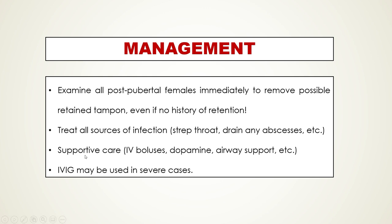We provide supportive care in the form of IV boluses, dopamine therapy for recalcitrant hypotension, and airway support in severe cases. Some practitioners use IVIG, as it acts as a competitive inhibitor for the immune system, fighting off those extra Fc regions rather than attacking the body. It may help somewhat — it's not entirely clear — but we do use it in severe cases.